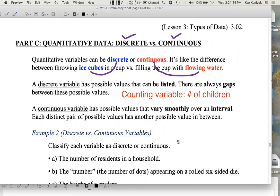Now, a continuous variable. Again, a discrete variable is more like ice cubes: 0, 1, 2, 3, 4. A continuous variable has possible values that can vary smoothly over an interval. So a discrete variable has values that are more like dots. It's like none, 1, 2, 3, and so forth. A continuous variable is more like this. A continuous variable has possible values that vary smoothly over an interval.